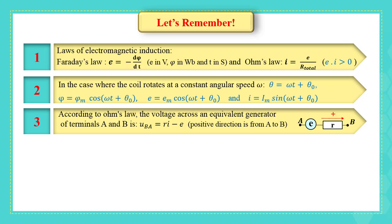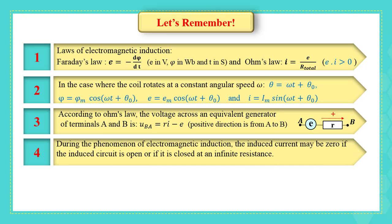Three, according to Ohm's law, the voltage across an equivalent generator of terminals A and B is UBA equals Ri minus E. Positive direction is from A to B in this example. Four, during the phenomenon of electromagnetic induction, the induced current may be zero if the induced circuit is open or if it is closed at an infinite resistance.